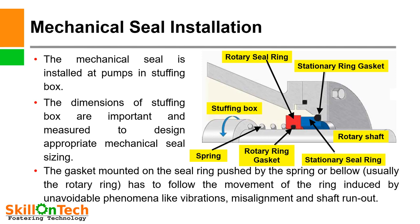A picture of mechanical seal installation is shown in the slide. The mechanical seal is installed at pumps in the stuffing box. The dimensions of the stuffing box are important and are measured to design appropriate mechanical seal sizing. The size of the mechanical seal depends on the dimensions of the stuffing box. The gasket mounted on the seal ring is pushed by the spring or bellows, and the gasket is mounted on the shaft sleeve at the rotary seal ring. The assembly has to follow the movement of the ring, induced by unavoidable phenomena like vibrations, misalignment, and shaft runout.